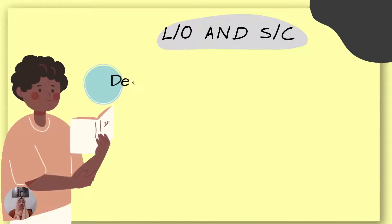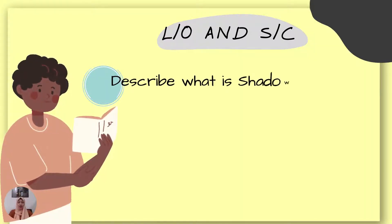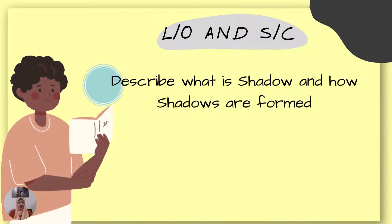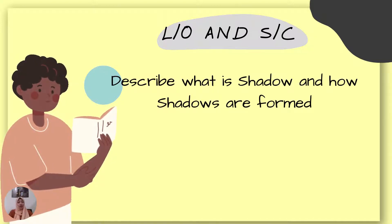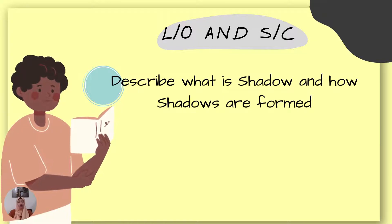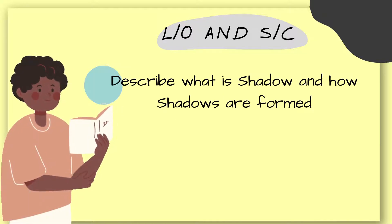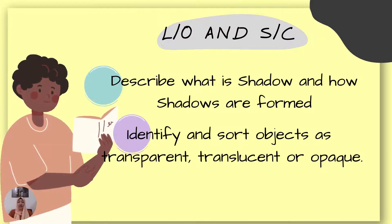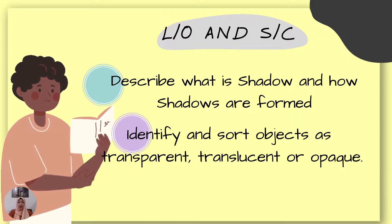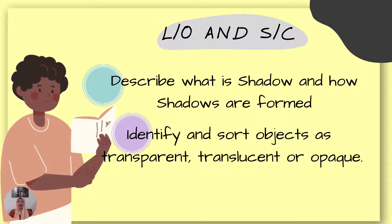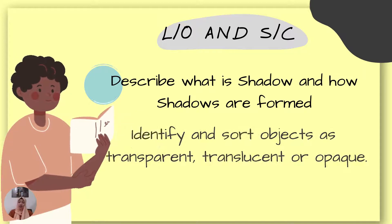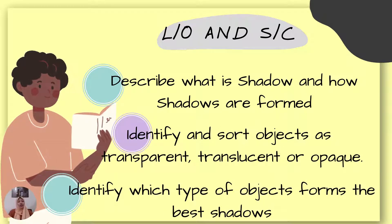So what are the learning objectives and success criteria for our topic today? One: describe what a shadow is and how shadows are formed, so at the end of the class you should know how to form a shadow. Two: identify and classify objects as transparent, translucent, and opaque — we have three types of objects. And the last one: identify which type of object forms the best shadows.